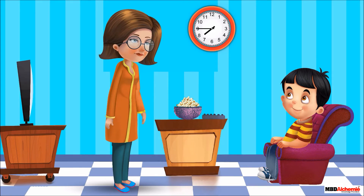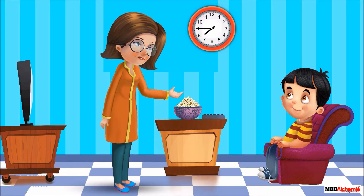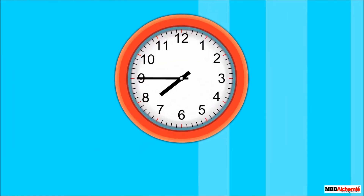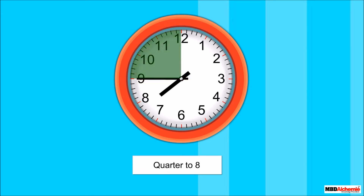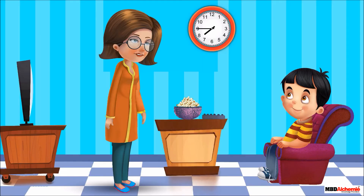His mother showed him the clock and said, first let us look at the hour hand. It is beyond 7 and closer to 8. Then let us see the minute hand — it is at 9. So we read the time as quarter to 8. When the minute hand is at 9, we observe that only a quarter of an hour is left to complete one hour, so we say it's quarter to 8.